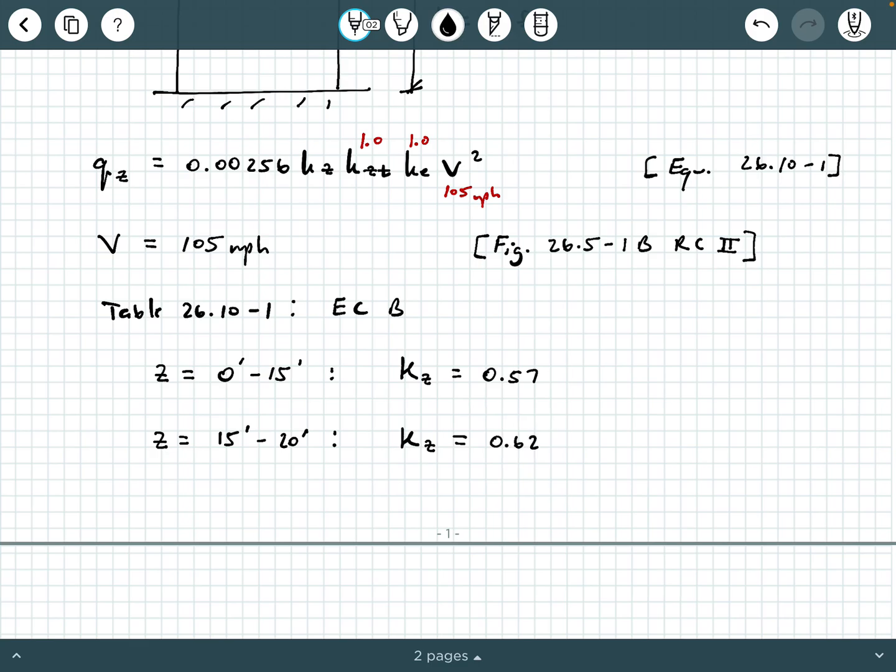Now, could you calculate values in between here? Could you say 16 feet, 17 feet, 18 feet, 19 feet, 20 feet? Yeah, absolutely, because you know what the governing equation is for KZ. It's found below table 26.10-1. But again, for practical intents and purposes, just grab the KZ value that actually corresponds to Z equals 20 feet, and we'll kind of take it as like a block pressure diagram for that.